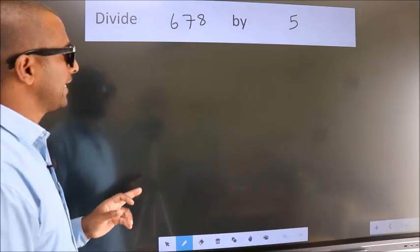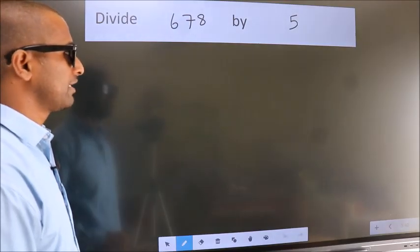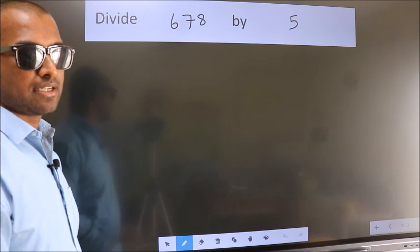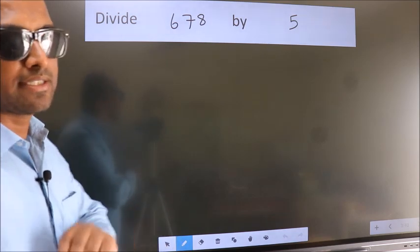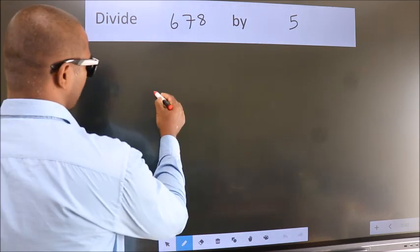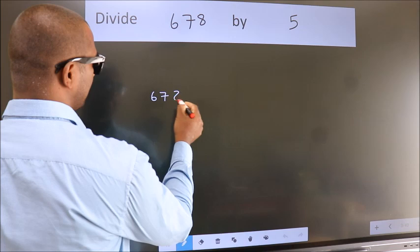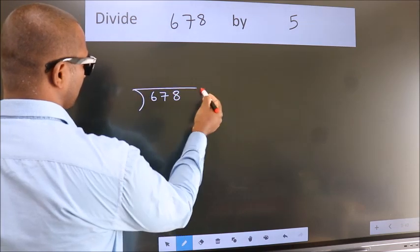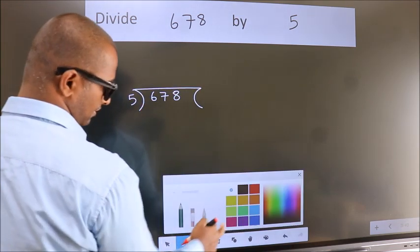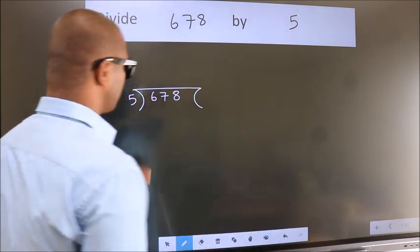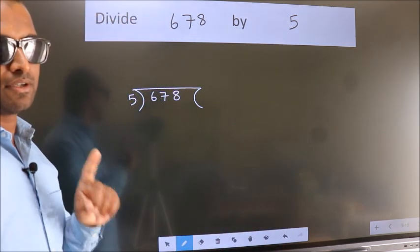Divide 678 by 5. To do this division, we should frame it in this way. 678 here, 5 here. This is your step 1.